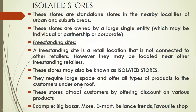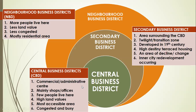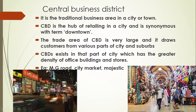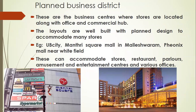So here we finished isolated stores and unplanned business district. This diagram comprises of unplanned business district: central business district, secondary, neighborhood, and strings. Now let's understand planned business districts. These business districts are where the stores are located along with the office and commercial hub. You can see a lot of offices in and around.